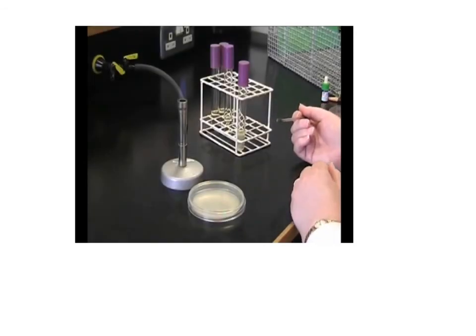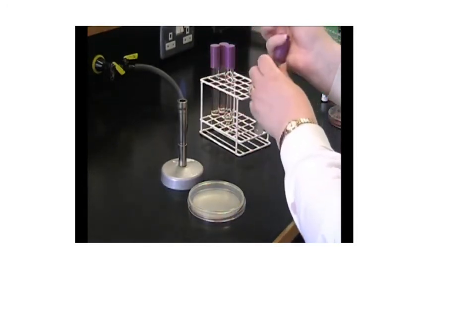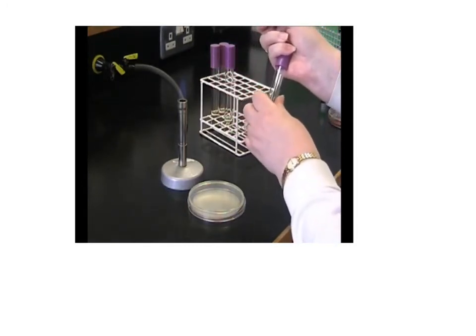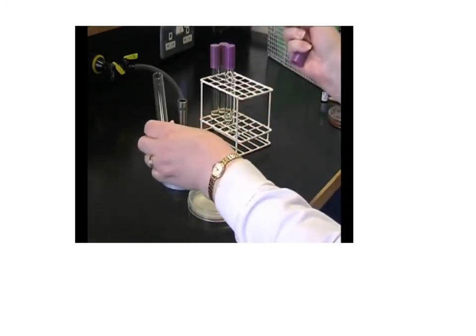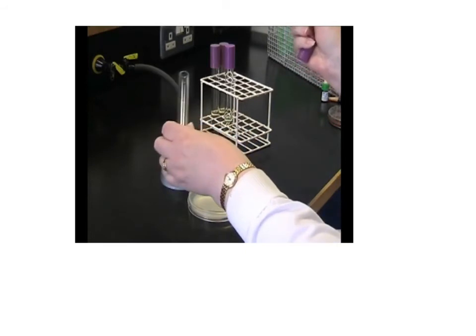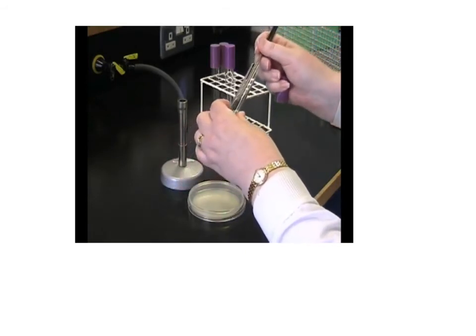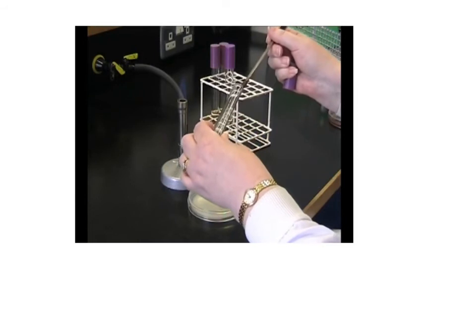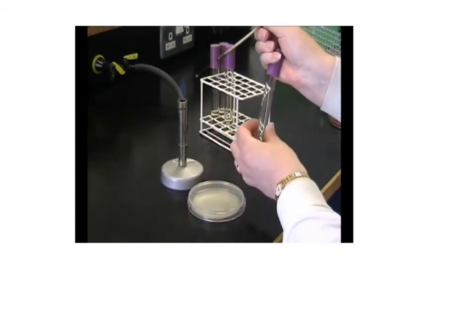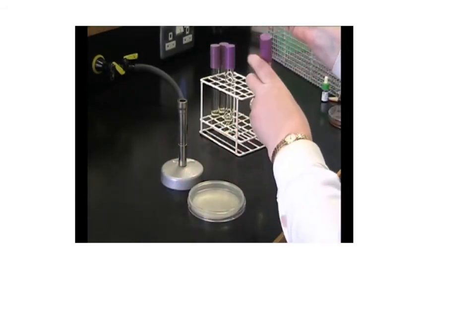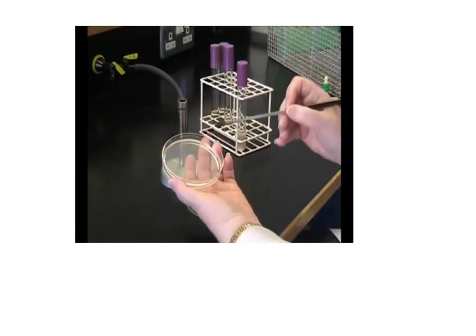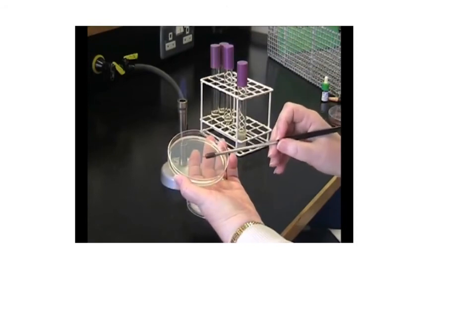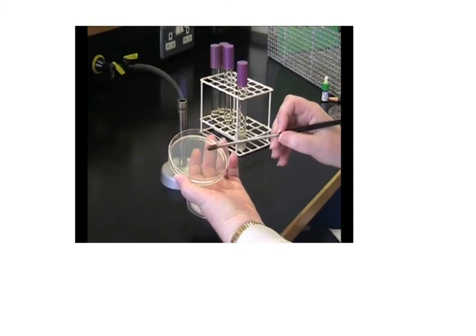To inoculate from a broth culture, use the same technique but holding the test tube, remove the cap with a little finger. Make sure you flame the neck of the test tube through the Bunsen burner. Using your cooled and flamed loop, remove a loop full of bacteria. Place the lid. You then streak this out onto the plate as before, making your primary streak, and then flaming your loop.